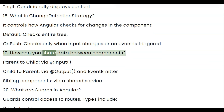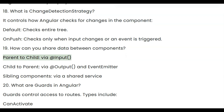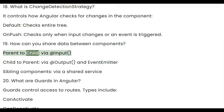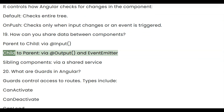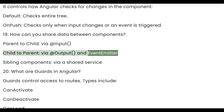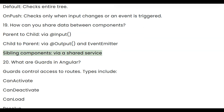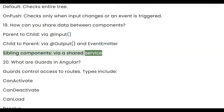Question 19: How can you share data between components? Parent to child via @Input. Child to parent via @Output and EventEmitter. Sibling components communicate via a shared service.